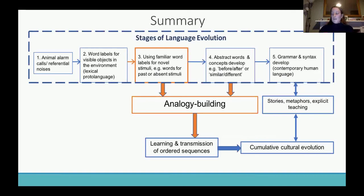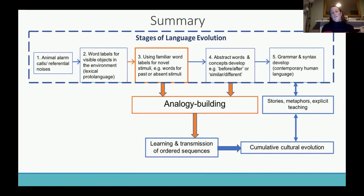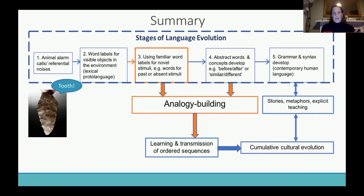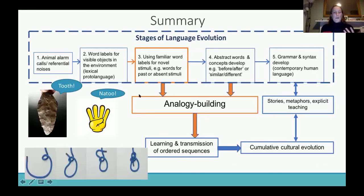Just to summarize — I've got some slides at the end about experiments and models if people want to talk about that — the main gist is that we're really focusing on this third stage of proto-language evolution, which really helps analogy building: using a familiar word to label a novel stimulus, like the tooth example and the natu example. And eventually when we get to contemporary human language with syntax and everything, we're able to do the kind of storytelling like the rabbit and knot tying.